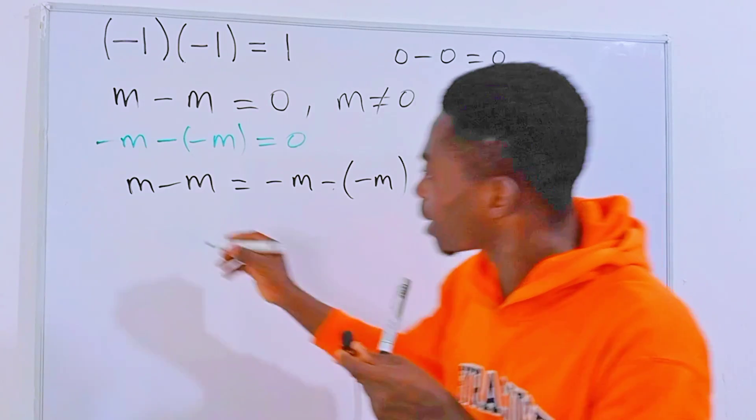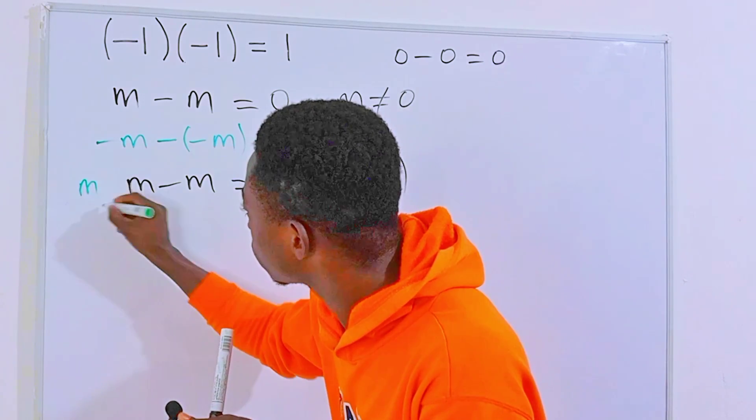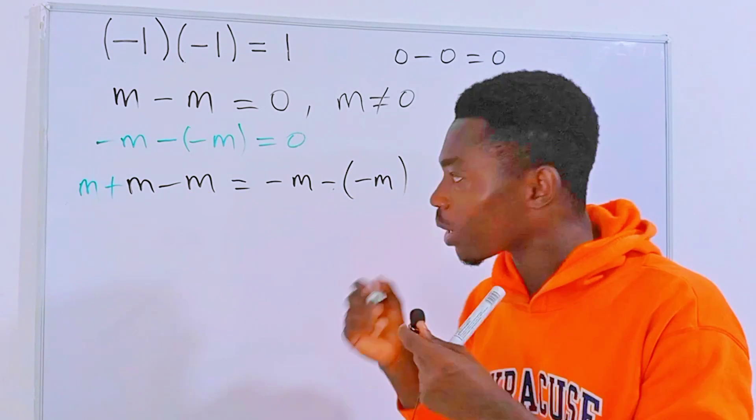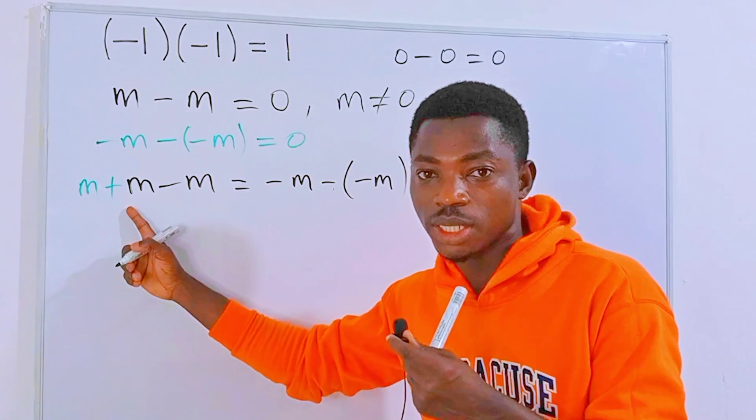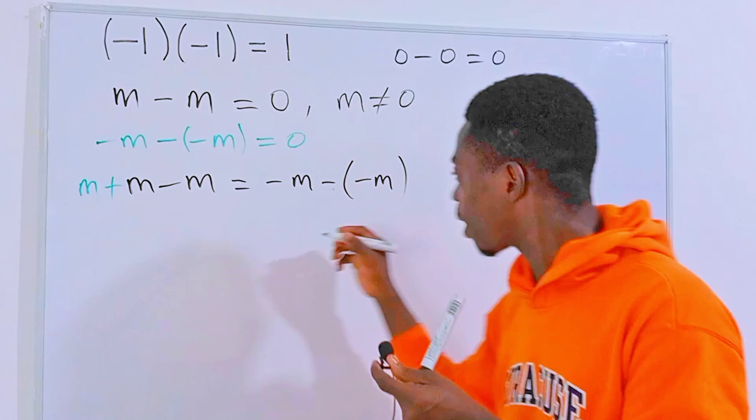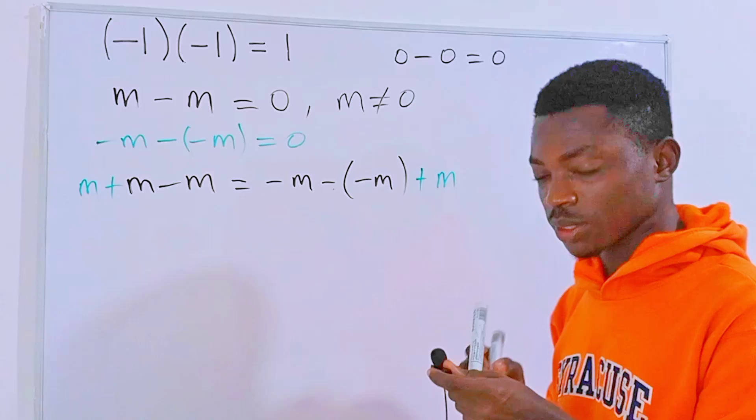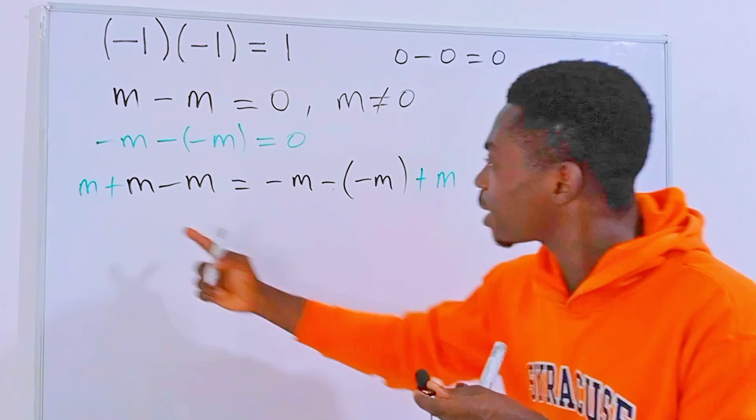Now what I'm going to do next is that I'm going to add m to this side of the equation. And in mathematics, whatever you do to the left hand side of the equation, you must do the exact same thing on the right. Therefore, I'm going to add m just like that.